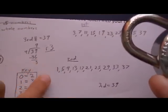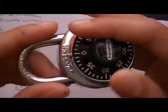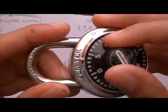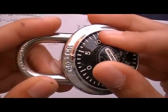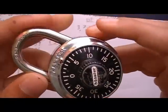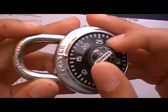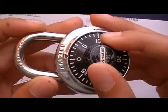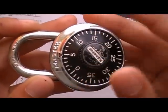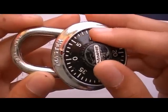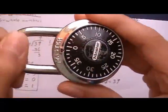So if we try 3, 5, and 39, so we clear it. And we land on 3, turn it counterclockwise, past the second number, in this case 5, and land on it the second time, then turn it clockwise back to 39. That doesn't work.